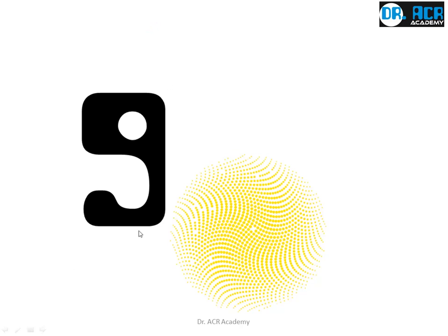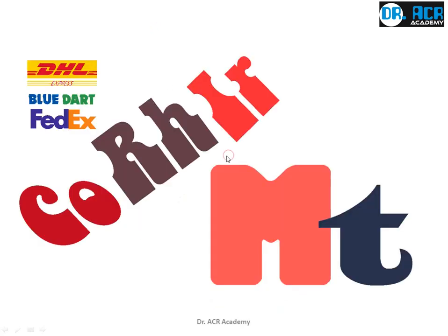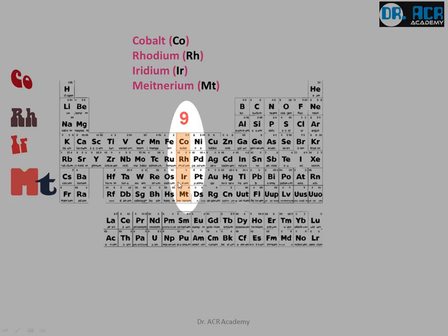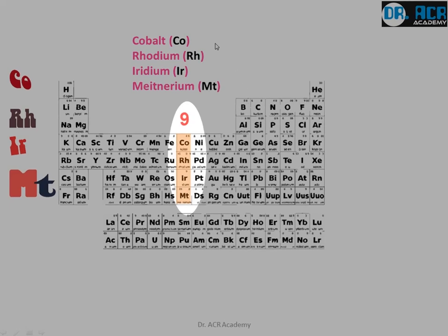Now we come to the ninth group. We know many courier systems, but there is a new courier system called Courier Empty. If you give Courier Empty the packet you want to deliver, they will post it within seconds. This is how it is linked to the periodic table — Courier Empty. And these are its real names.